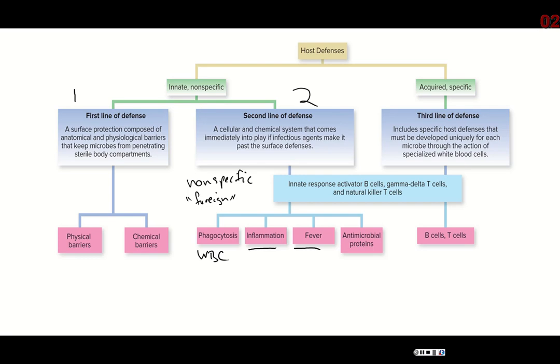After the second line of defense is activated, we also activate the third line of defense — they work simultaneously. The second line is faster because it attacks anything foreign, while the third line is slow the first time around because it has to learn what the pathogen looks like. But that means it's specialized — each B and T cell will only match up with one particular type of pathogen. So you might have a B cell for measles, but those cells would not help you fight influenza.